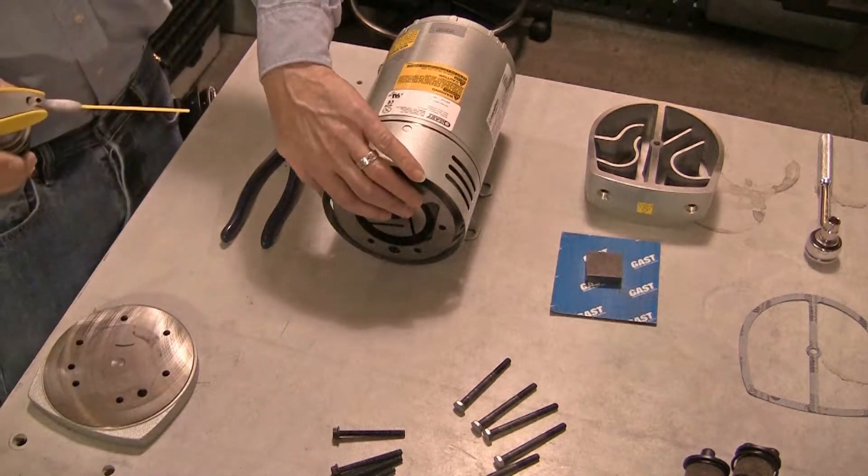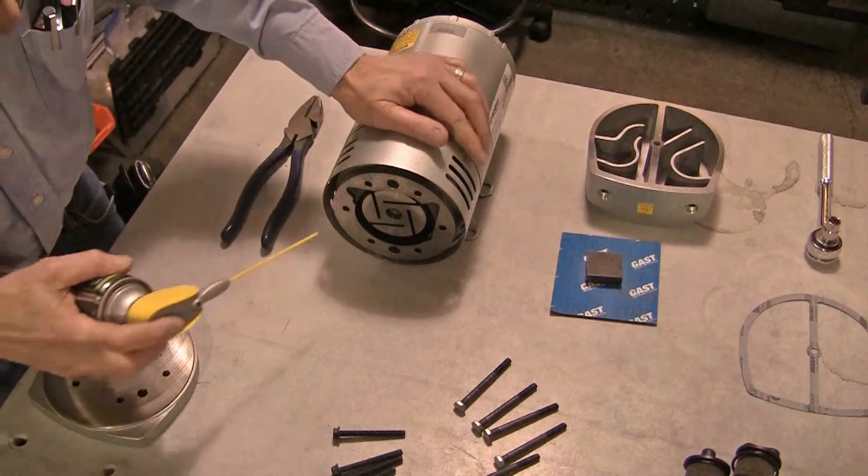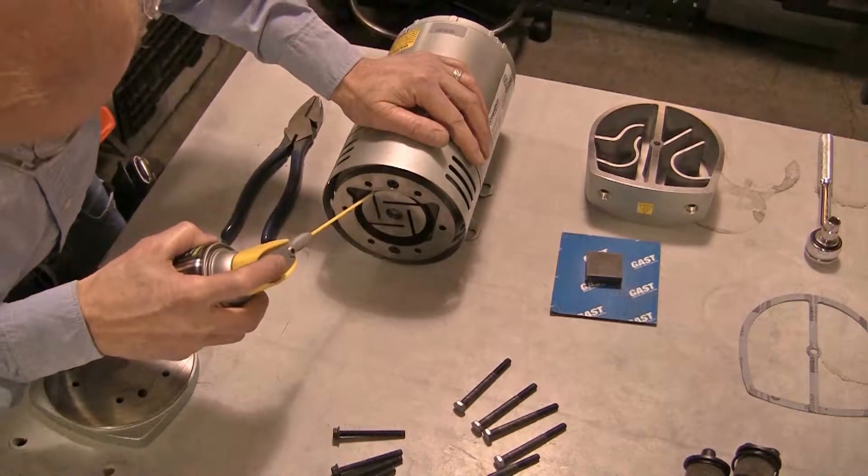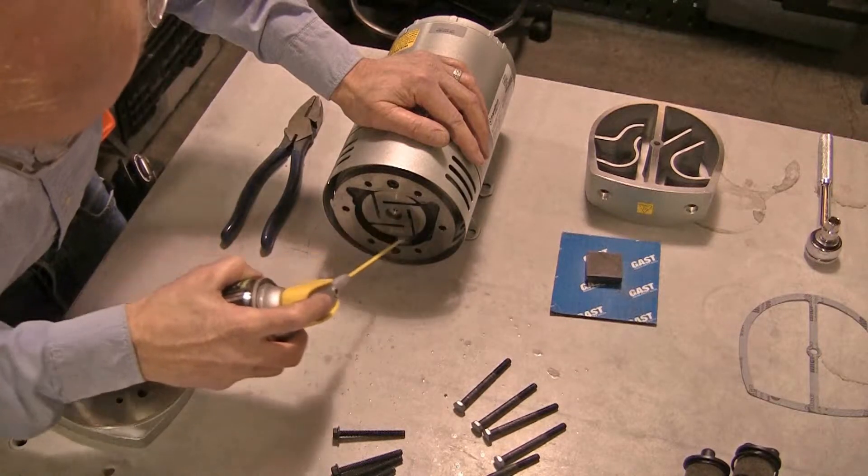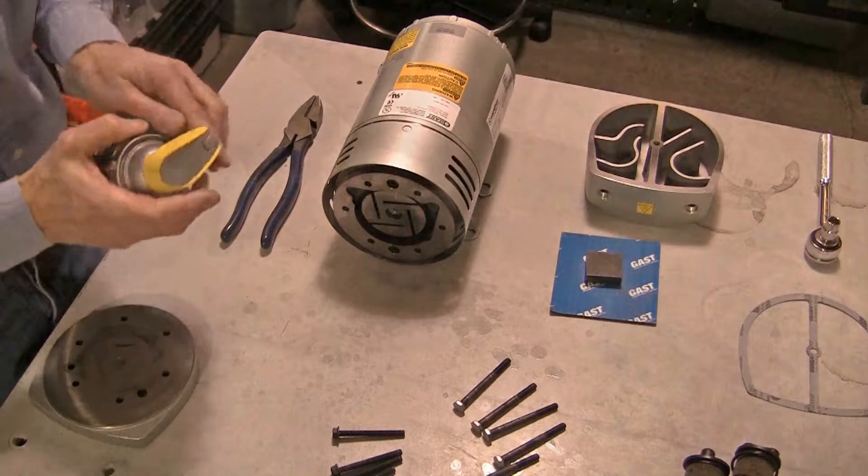If needed, clean out the rotor and the housing body to remove any carbon dust left from the old vanes and/or abrasive dust. Cast AH255D flushing solvent or a good quality electrical cleaner works for this.